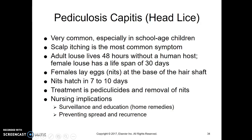The most common symptom is itching, and often the only symptom is itching. When the eggs hatch, they have to get their blood meal from their human host within 24 to 48 hours. Then they have about a 30-day lifespan — they're immature for a couple of weeks, then become mature and can reproduce. A single female louse can lay thousands of eggs, and those take 7 to 10 days to hatch, so you get quite a bad infestation in a few weeks.